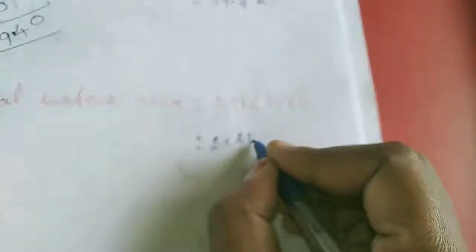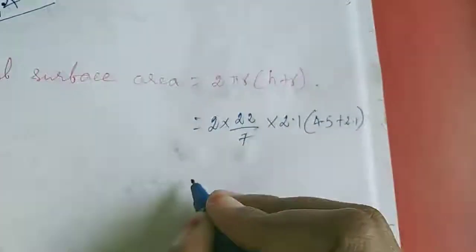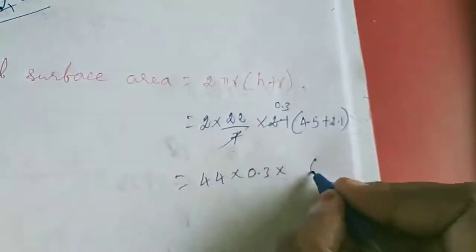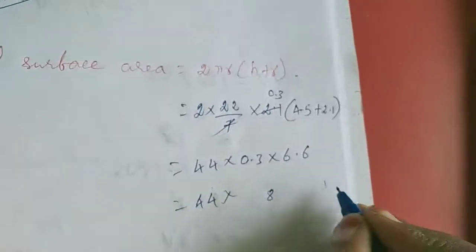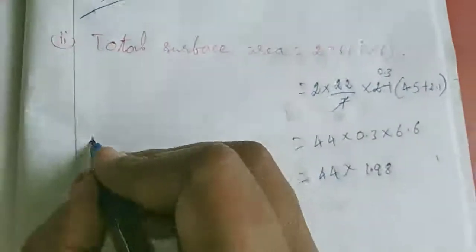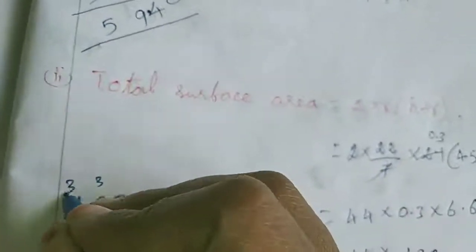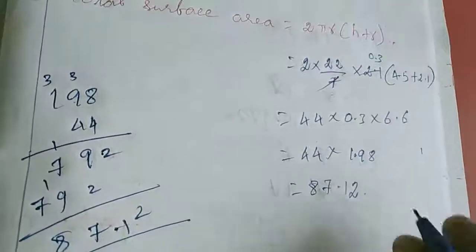I am going to find out the total surface area. 2 into 22 by 7, R 2.1, H 4.5 plus 2.1. 0.3 times 44 into 0.3, if you add this you will get 6.6. 44 into 18 gives 87.12 meter square.